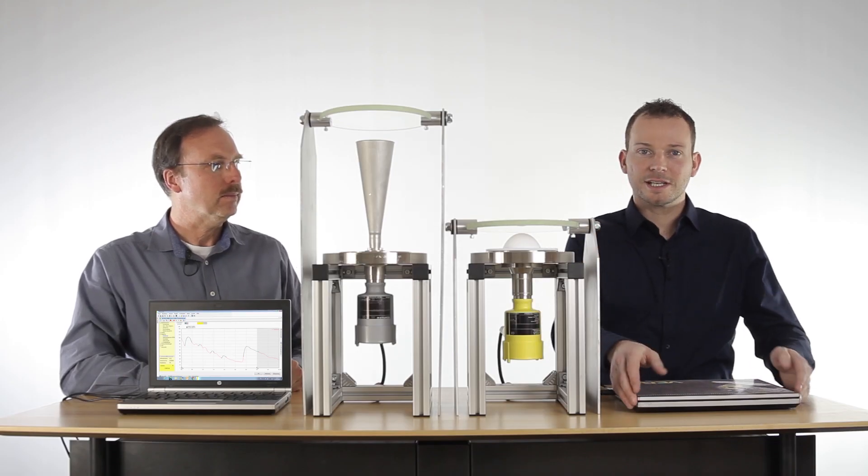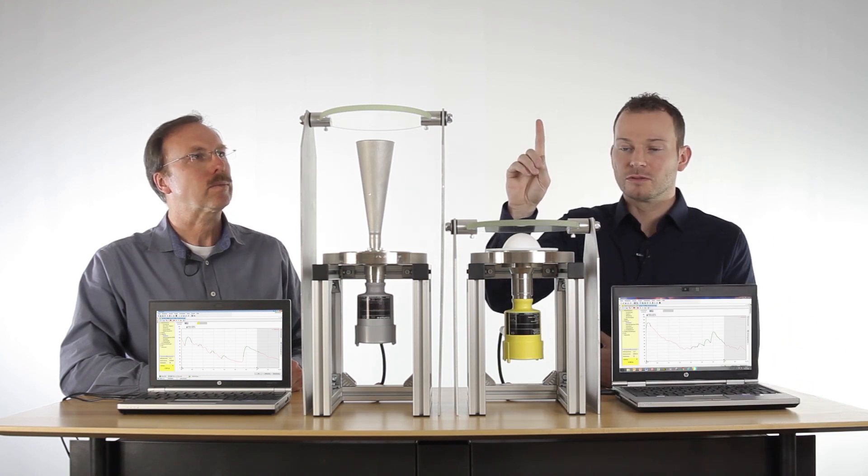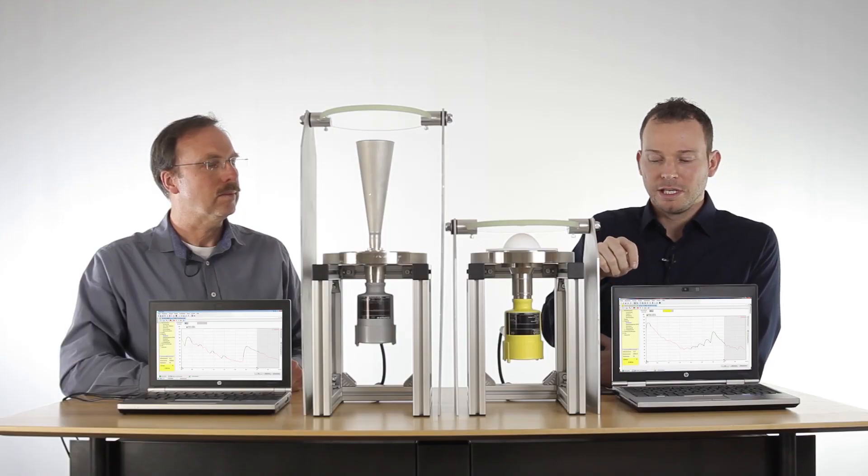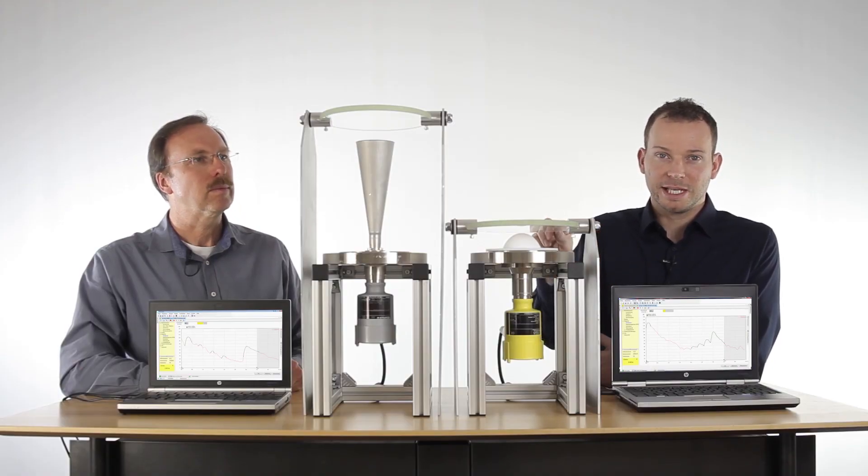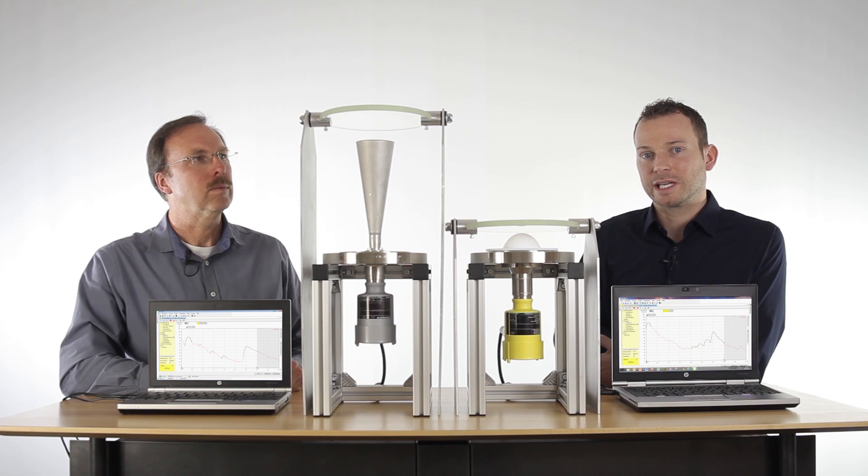On this side we have the Vega Pulse 64. We've mounted it the same way, measuring up to the roof through this glass. If you look at the echo curve, you see the reflection from the glass, but there are no multiple reflections, so there are no false signals in the near range - you have only the product echo in the back.